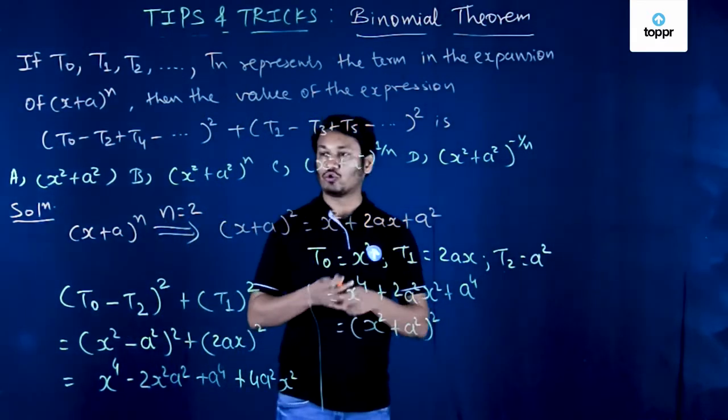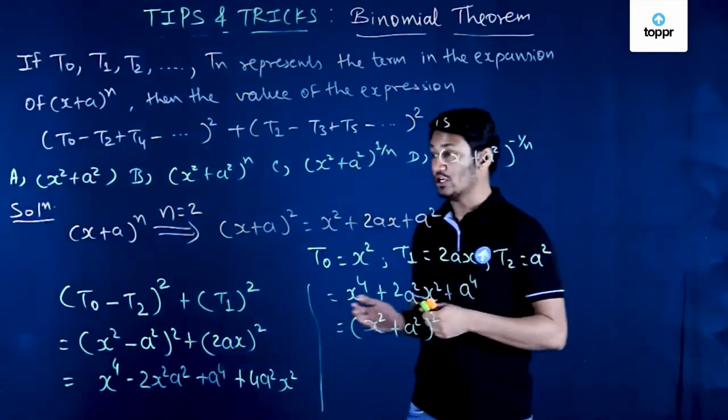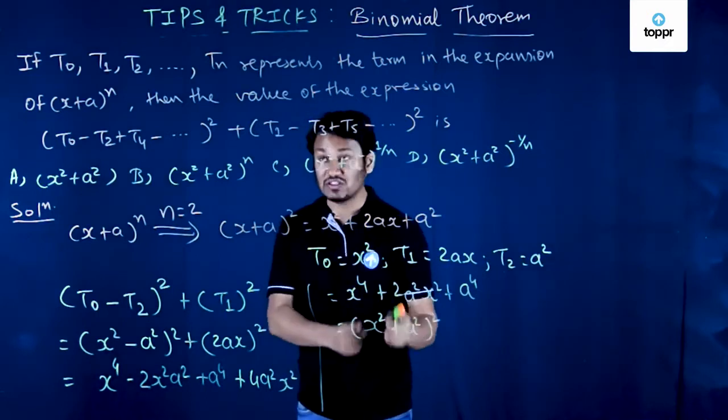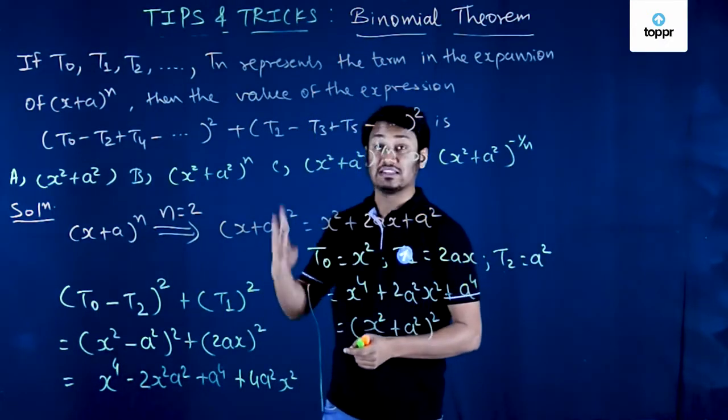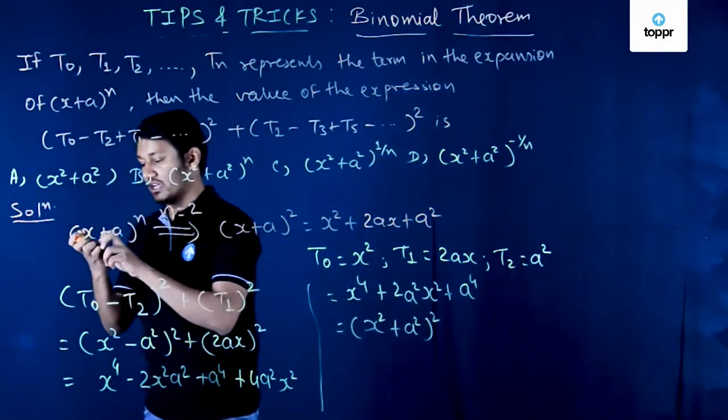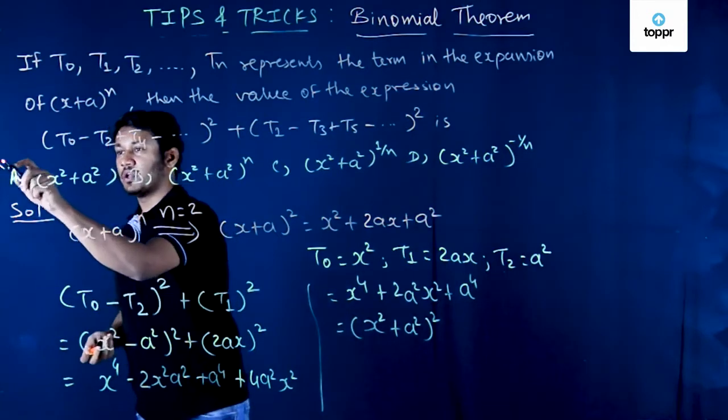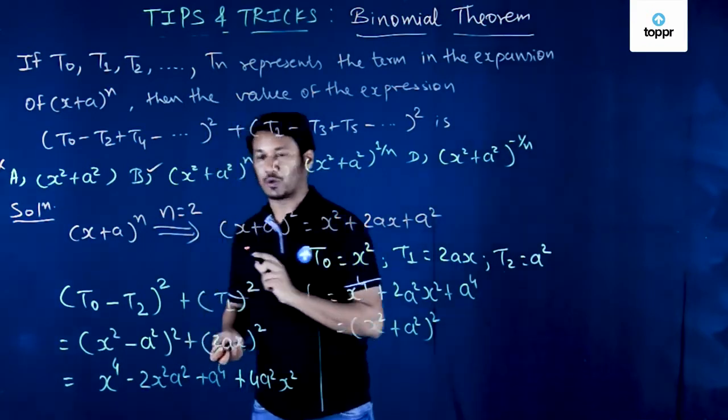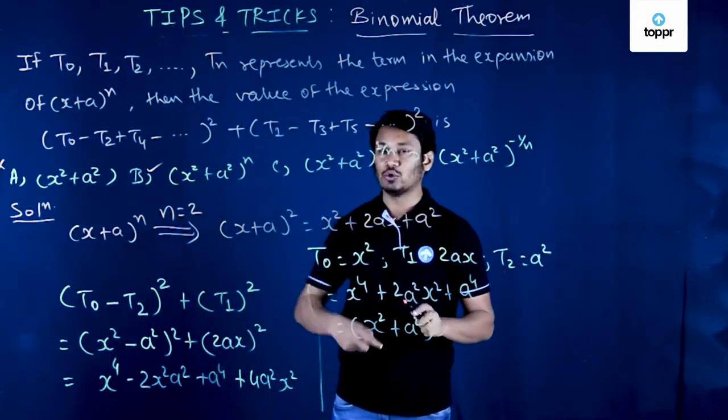Now we have to go through all the options and for n equal to 2 we have to see which option gives us (x^2 + a^2)^2 because this is the value of the given expression when n is equal to 2. You can see that I can remove option A straight away because there is no square here. Option B gives me (x^2 + a^2)^2 because n is equal to 2.